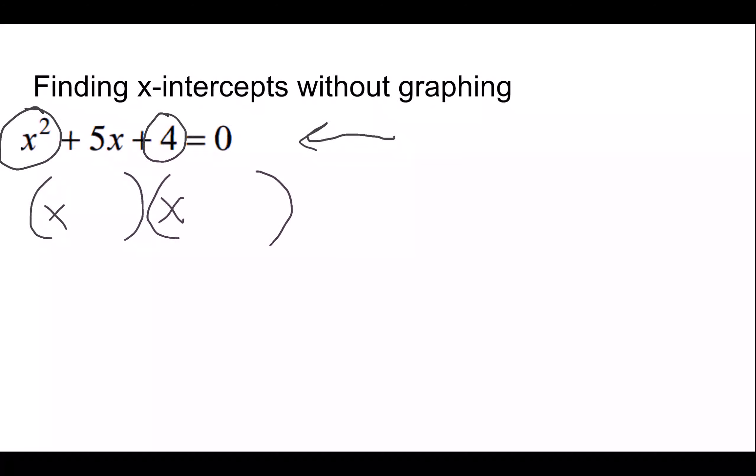What multiplies together to give me 4, but then will add together to give me 5? Well, that would be 4 and 1.